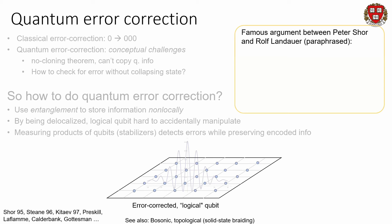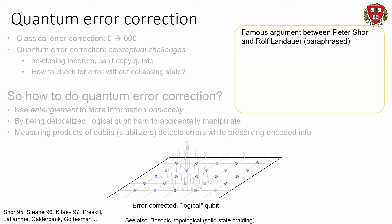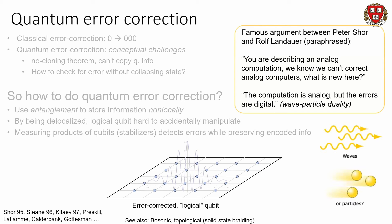This is well captured by the famous argument between Peter Shor and Landauer, where Landauer was protesting recent ideas in quantum computation, saying this just seems like analog computation and we know it doesn't work because you can't correct errors. And Peter's response is that although the computation is analog, the errors are digital. This really gets at core physical mechanisms of quantum mechanics: you can do quantum computations in the wave-like mode of a quantum system, but when you measure it, because of the important role of projective measurement, you get particle-like behavior that discretizes your errors and allows you to correct them.